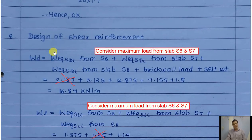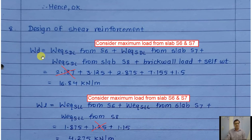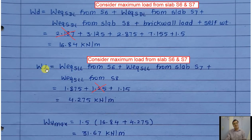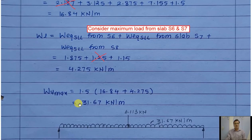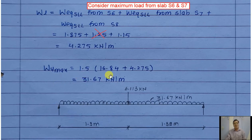For shear design, separate load calculations are required. W_equivalent_S (shear purpose) dead load is computed from slabs S6 and S7, taking the maximum. For live load, similarly the maximum from S6 or S7 is taken, which is from S6 and S8, totaling 4.275 kN/m. W_u_max = 1.5 × (DL + LL) = 31.67 kN/m. The point load of 8.113 kN is also included. Reactions: R_B = 46.52 kN, R_A = 46.78 kN.